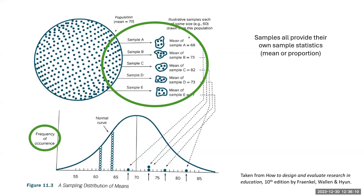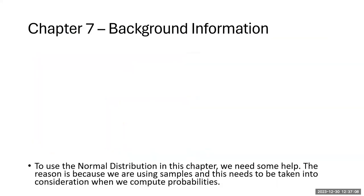We can see values like 68, 73, 77, and even 82 out in the right tail. If we repeat this process of taking samples over and over, keep track of the means, and count their frequency, what we notice is it begins to follow a normal distribution — a bell-shaped curve. This applies in the context of means, but we could do this with proportions as well. The sampling distribution of means would be this normal distribution tracking how often those statistics occur.